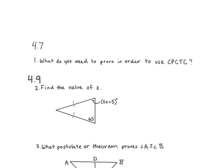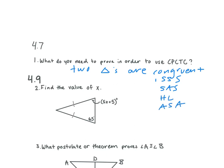Let's take a look at number one. What do you need to prove in order to use CPCTC? That the two triangles are congruent. What are the different ways we can prove a triangle is congruent? Remember, CPCTC comes after we prove they're congruent. So if we're doing a proof, we first need to prove that they're congruent. Those are the five ways we can prove triangles are congruent.